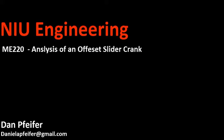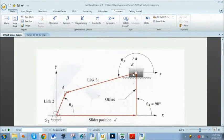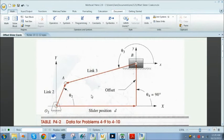Hello and welcome, I'm Dan Pfeiffer and today we're going to be discussing the offset slider crank that is shown here. As the crank moves around in a circle, we're going to see that the slider position D is variable.